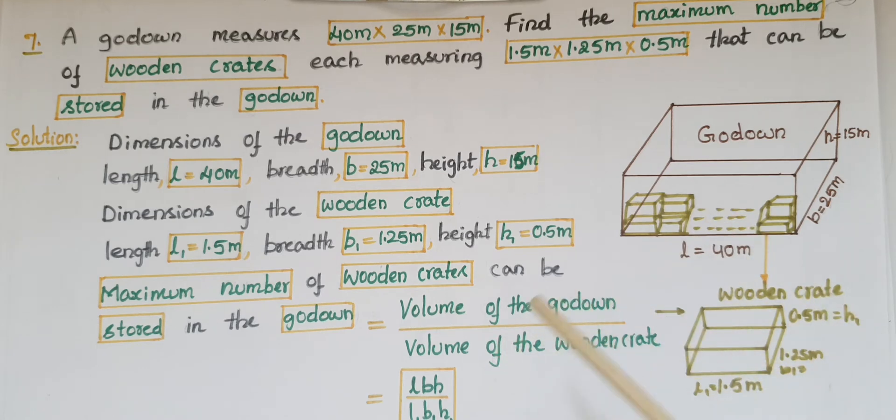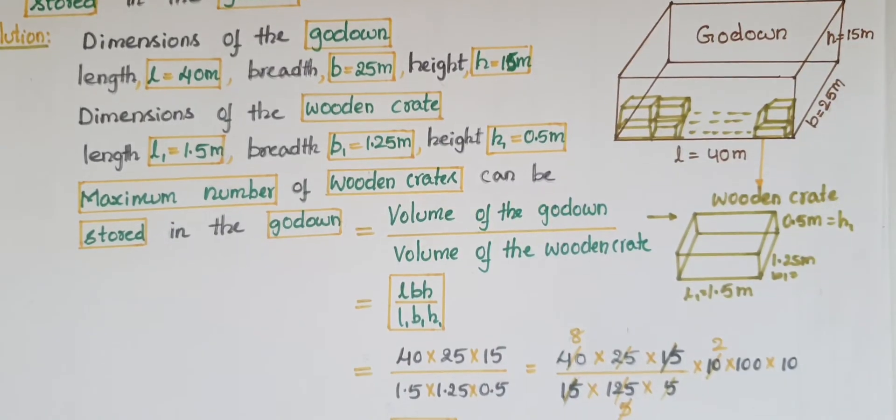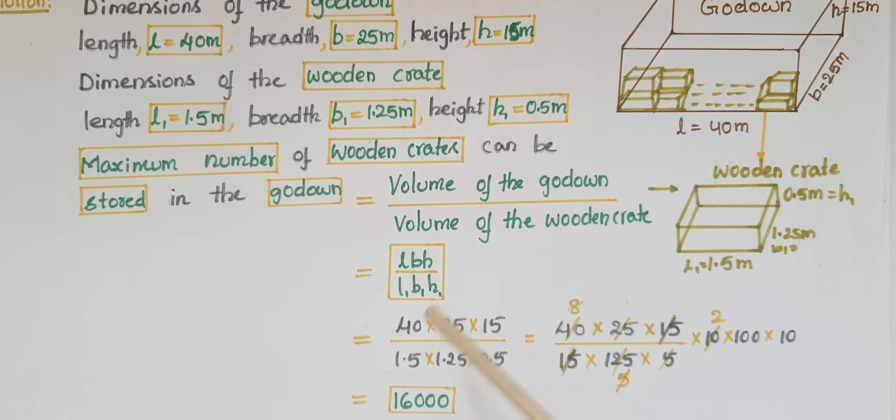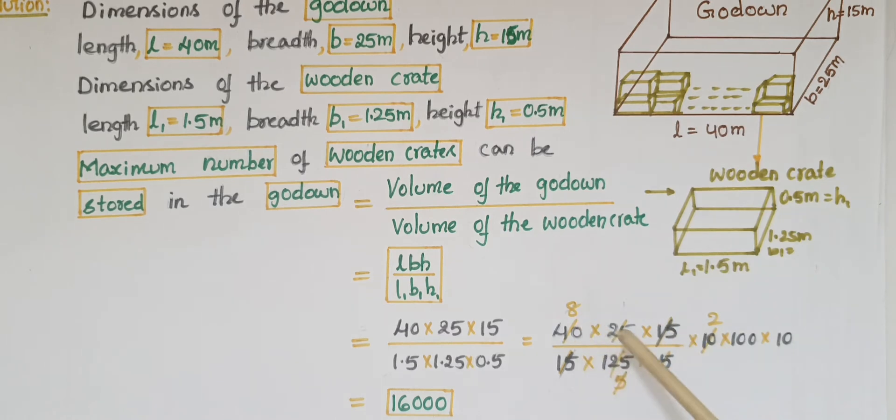The number equals volume of the godown divided by volume of the wooden crate, that is equal to lbh divided by l₁b₁h₁. That equals 40 times 25 times 15 divided by 1.5 times 1.25 times 0.5.